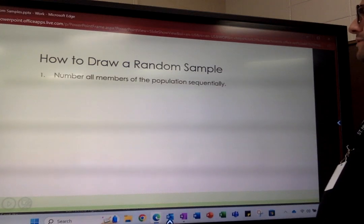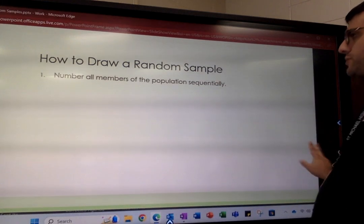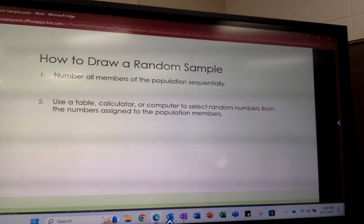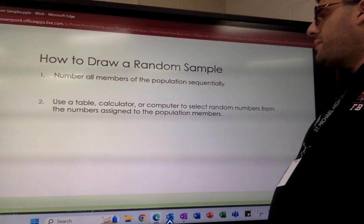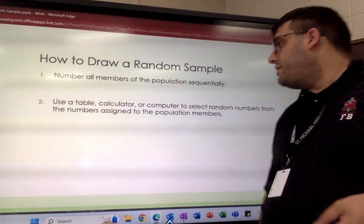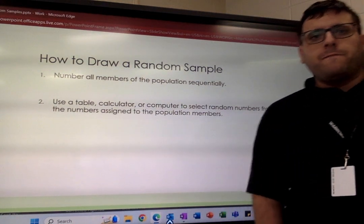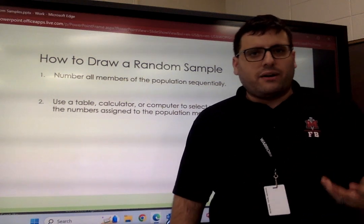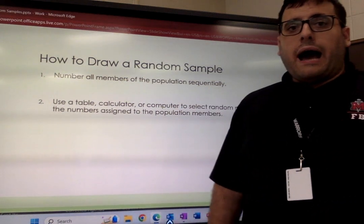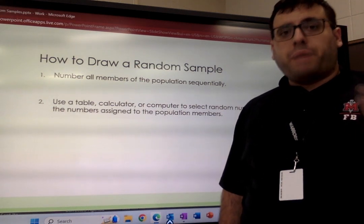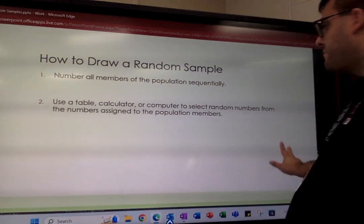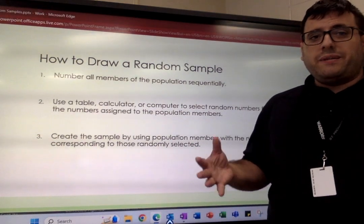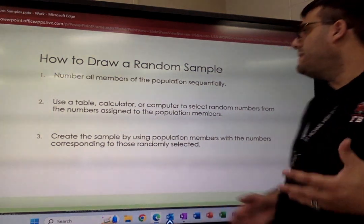To recap: when we draw a random sample, we number all members of the population in sequential order, then use a table, calculator, or computer to select random numbers from those assigned to the population members. We don't have to use the random number table — we can use a calculator, a computer, or a random number generating website. Then we create the sample using the population members whose numbers correspond to those randomly selected. It really just boils down to pulling names out of a hat — that's all a simple random sample is.